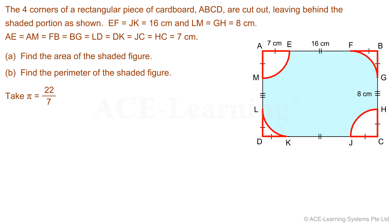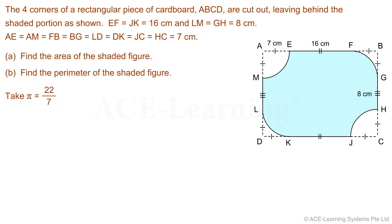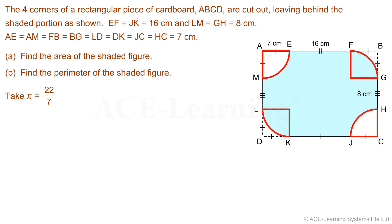The four corners of a rectangular piece of cardboard ABCD are cut out, leaving behind the shaded portion as shown. We are given the lengths of some of its sides as well as the sides that are equal in length. From the given diagram, we note that the four corners are quadrants and their curved lengths are equal in size because they have the same radius.